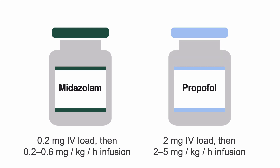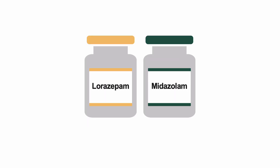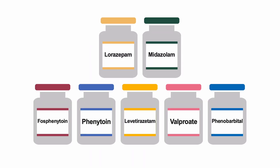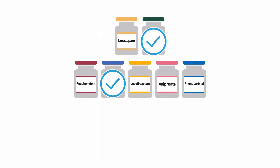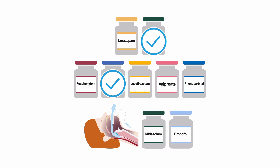Don't sit around for half an hour hoping the medications will take effect and then call the intubation team. Rather, be prepared to go to intubation as soon as it's clear the seizures may not respond to first- and second-line medications. Don't try multiple medications from the first- and second-line groups — go with one of each and be prepared to intubate and administer anesthetics.